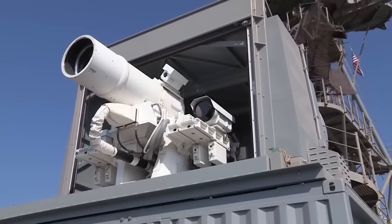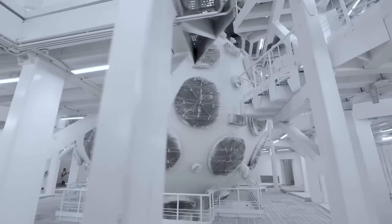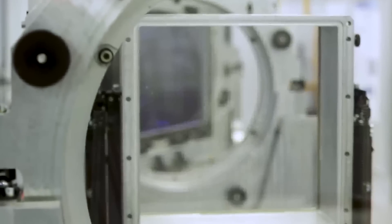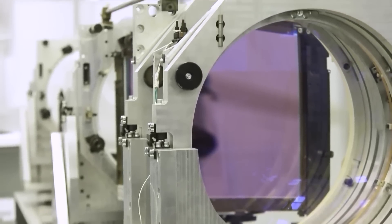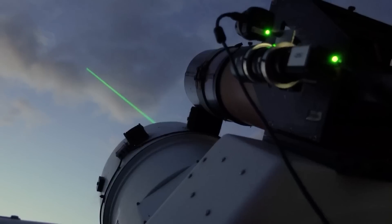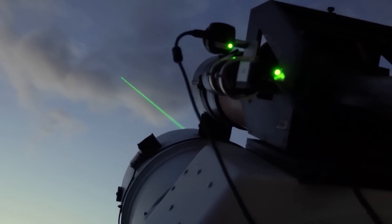Eight Arleigh Burke-class destroyers are also equipped with the ODIN Optical Dazzle system, and one Arleigh Burke-class destroyer is equipped with the well-known 60 kilowatt high energy laser with the HELIOS integrated optical dazzle and surveillance system. Some of these systems are already in active use and are helping to repel attacks in the Middle East, which significantly reduces the cost of air defense.